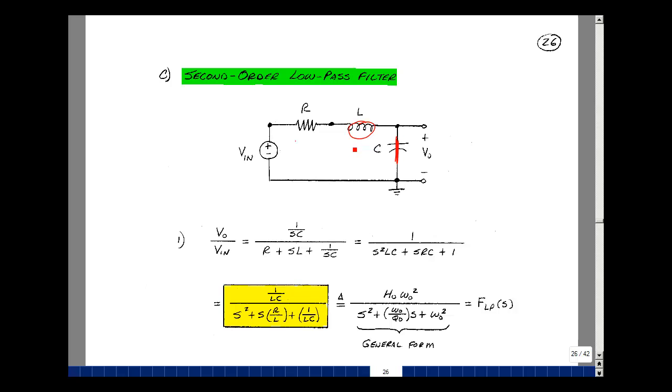Now, they're not really truly opens and shorts, but low values and high values. If you have a series combination for a voltage divider, and one of the elements is much bigger than the others, then most of the input voltage is across that element. That's going to cause a current to flow. That's equal to VN over SL.